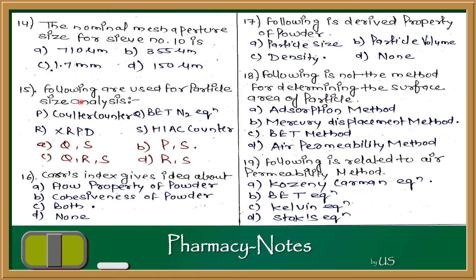Question 15: Which of the following are used for particle size analysis? Methods studied include optical microscopy, sedimentation method, sieving method, and Coulter counter method. Looking at the options: Coulter counter is an obvious particle size method; BET equation and XRPD relate to surface area; HIAC counter is also used to determine particle size. So the answer is B — Coulter counter and HIAC counter (P and S).